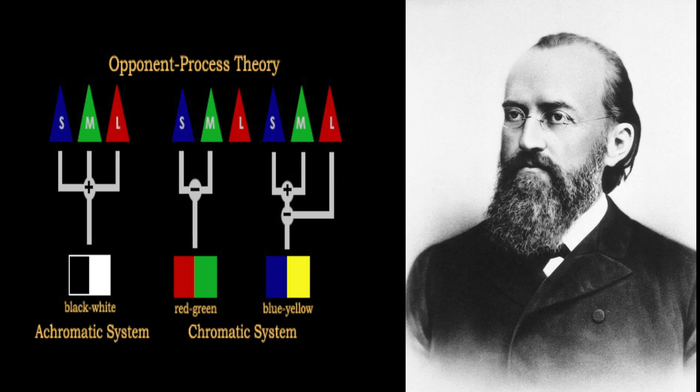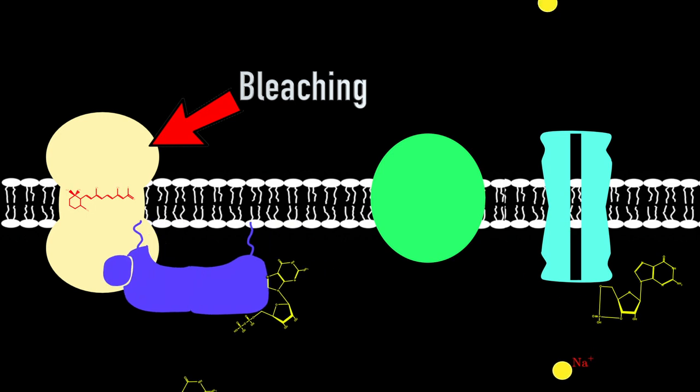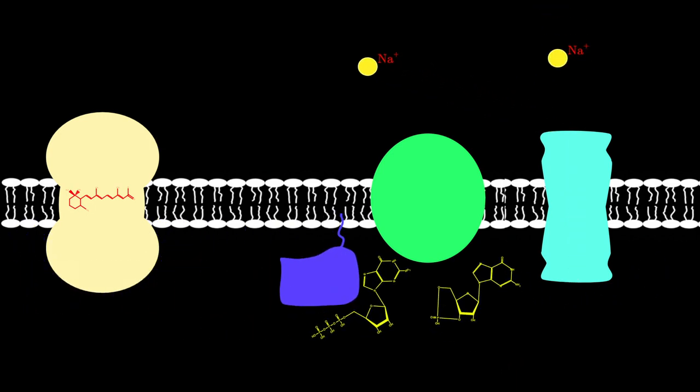The opponent process theory was proposed in 1878 by Ewald Hering, which states that three classes of cones encode two complementary color perceptions. This was based on the observation that there is no such thing as bluish yellow, or reddish green, or blackish white. There is evidence of the opponent process on all levels of the retinal geniculate striate system, such as cells that respond to motion in one direction. To test the color opponent process yourself, look at this inverted color of the American flag. Fixate your gaze at the center of the flag and I will flip the screen to white in 15 seconds. Notice how the color inverts. This is due to the color opponent process.